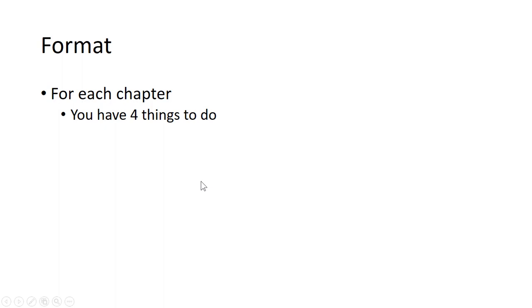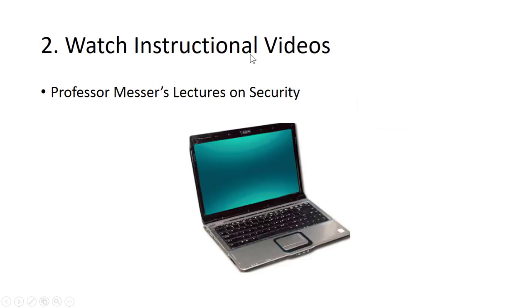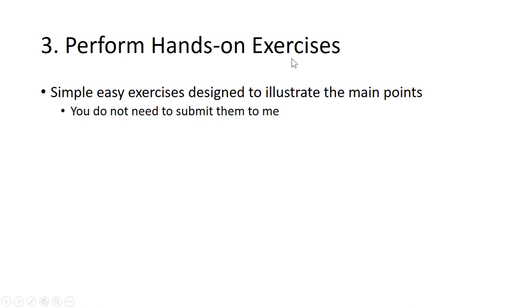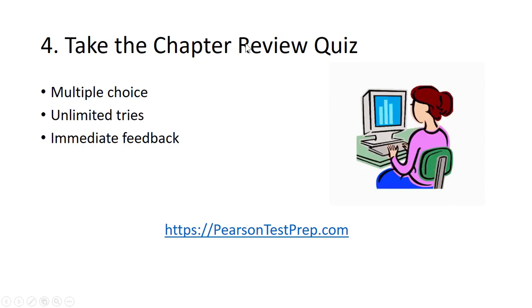Now let's discuss the format of the class. For each chapter, you have four things to do. One, read the chapter in the textbook — this can be difficult reading, especially if this is your first time through this material, so please force yourself to read all the way through. Then, watch the instructional videos — these are Professor Messer's lectures on security. Then, perform the hands-on exercises, which are simple exercises designed to illustrate the main points. You do not need to submit these exercises, but you should do them because the project is based on them. Finally, take the online review quizzes.